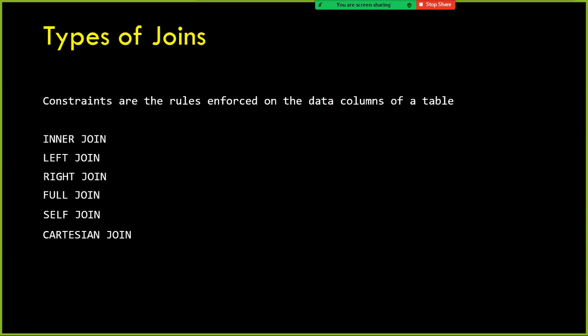Next we will look at joins. What are the types of joins available? Inner join, left join, right join, full join, self join, and Cartesian join. What is inner join? Inner join retrieves matching values between two tables. If you want to retrieve data from two tables, whatever values are in table A, the corresponding value should be selected from table B also.